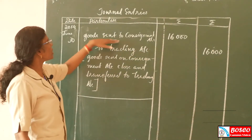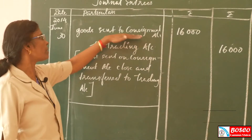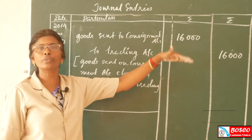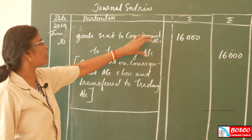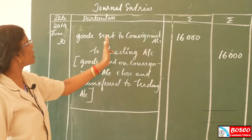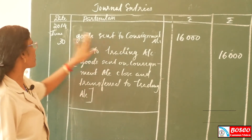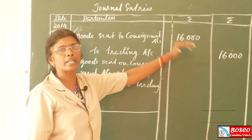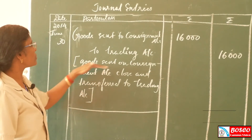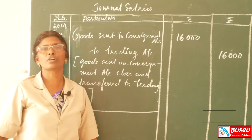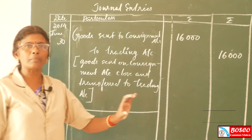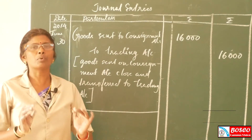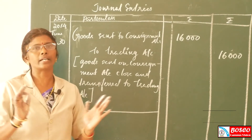The last journal entry in J. Products' books: close the Goods Sent on Consignment account and transfer it to the Trading Account. Entry: Goods Sent on Consignment Account debit to Trading Account — Rs. 16,000. Narration: Goods Sent on Consignment account closed and transferred to Trading Account. This completes the entries in the books of the consignor.